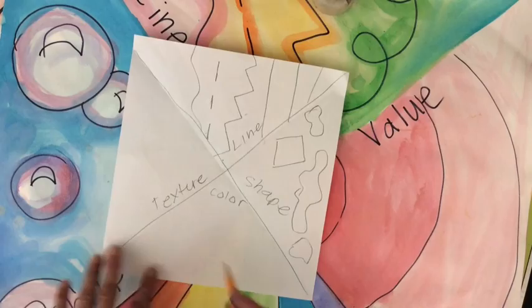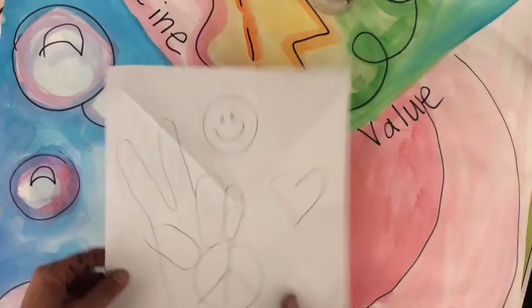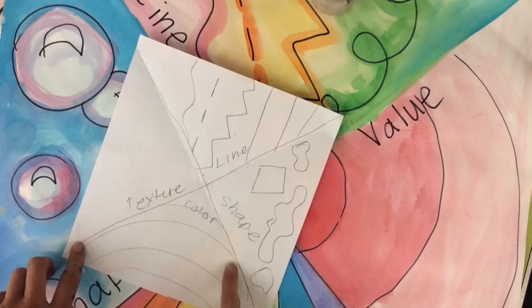On the color I could draw a rainbow. And on the texture we can actually put texture underneath and add texture to it. Now once I've finished drawing my designs, then I am going to color them in with crayons or colored pencils.